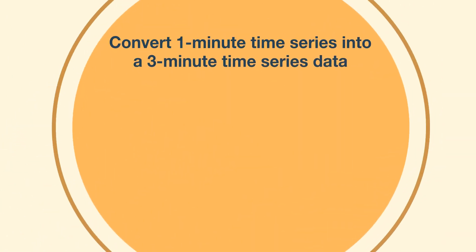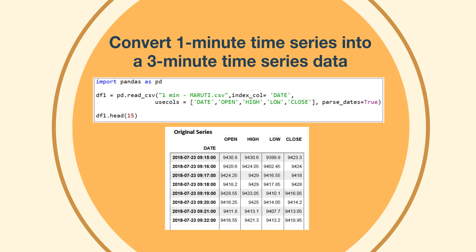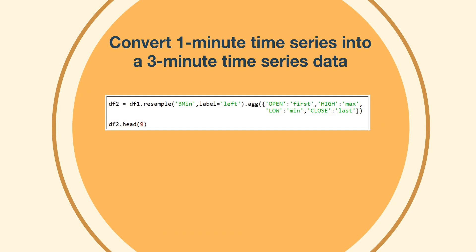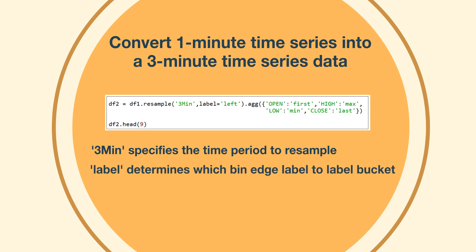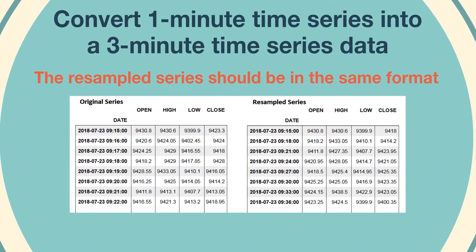In this example, we will illustrate how to convert a one minute time series into a three minute time series. We first read the simulated one minute data using the read_csv method. Next, we use the resample function, which takes two arguments to create the resampled series. The first argument, three minutes, specifies the time period to resample, and the second argument, label, determines which bin edge label to use to label the bucket. Since we are dealing with OHLC data, we want to preserve the same format and meaning of OHLC in the resampled series.